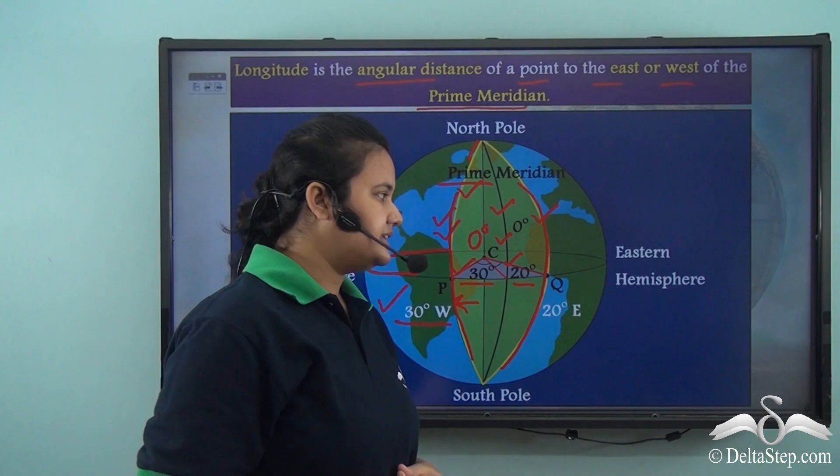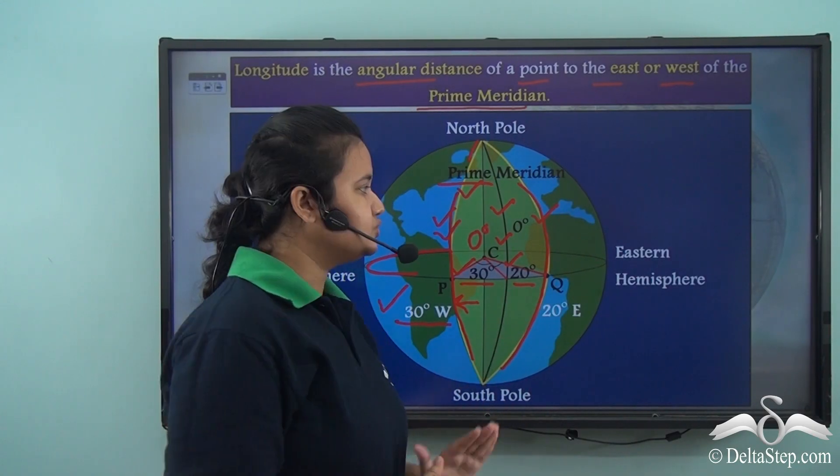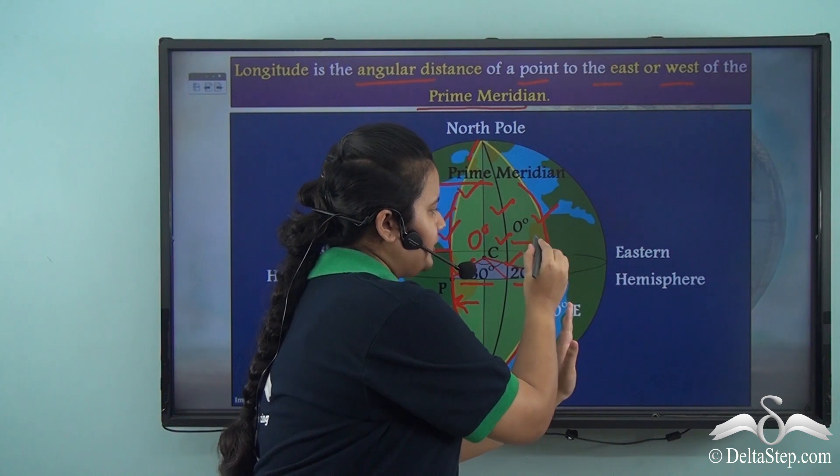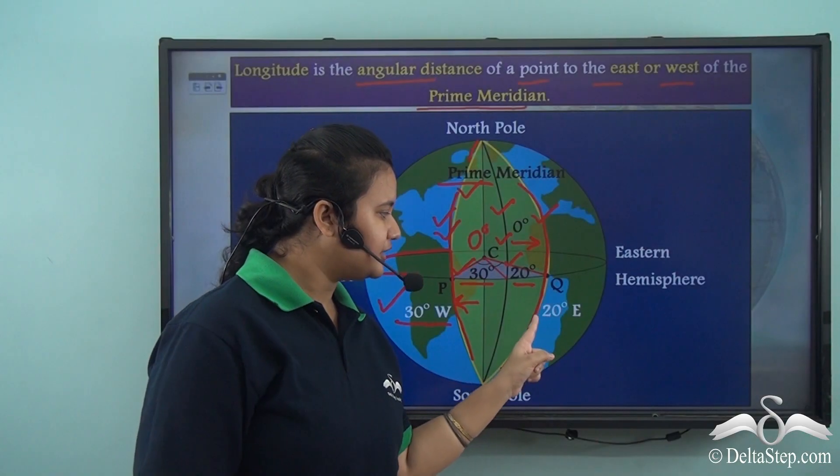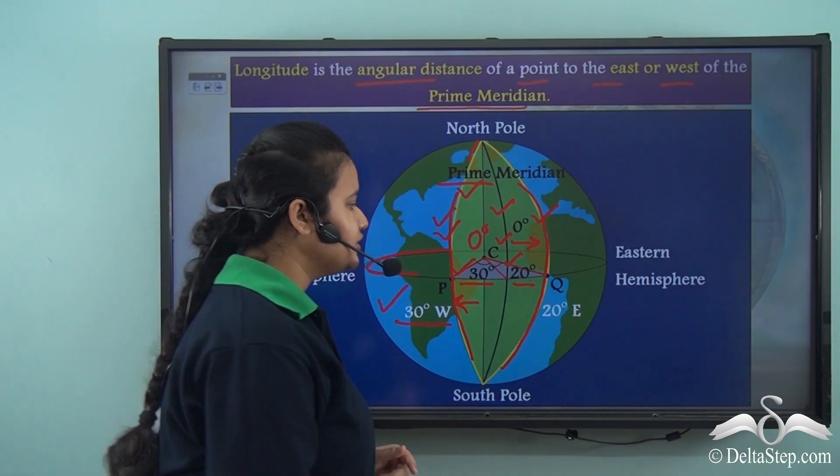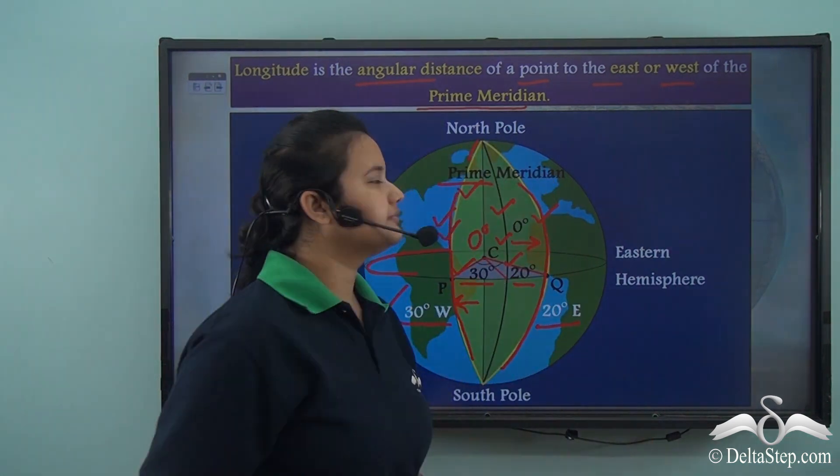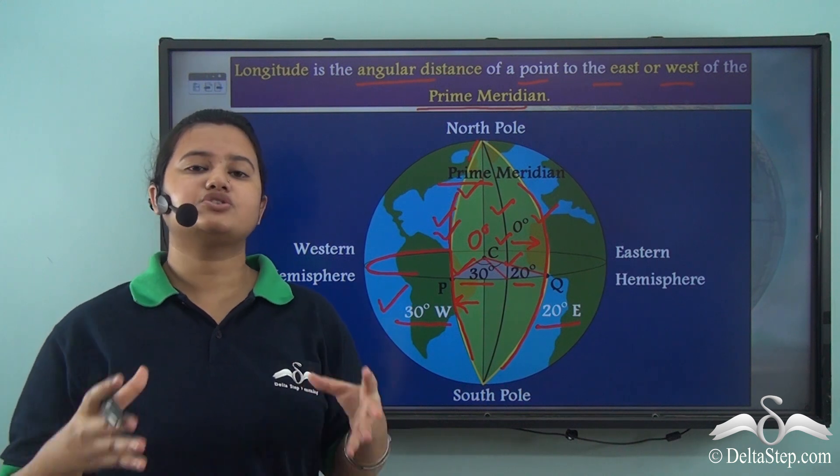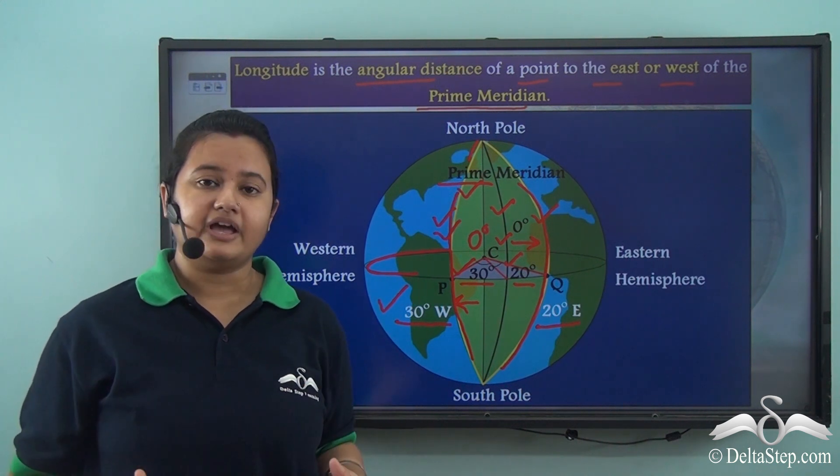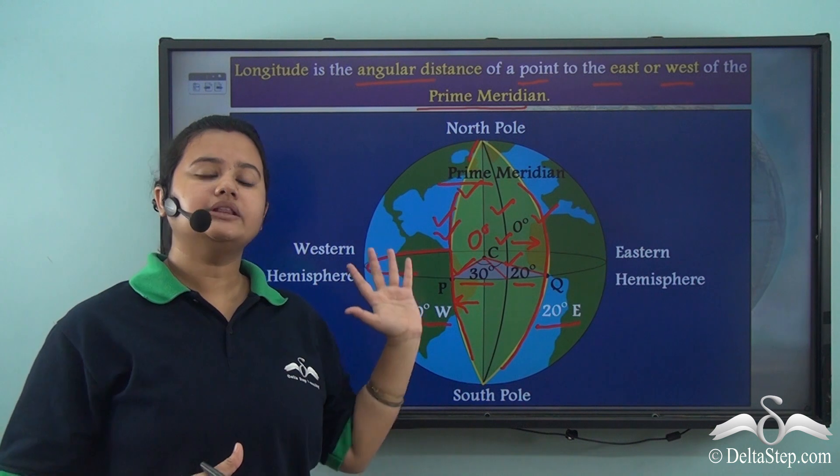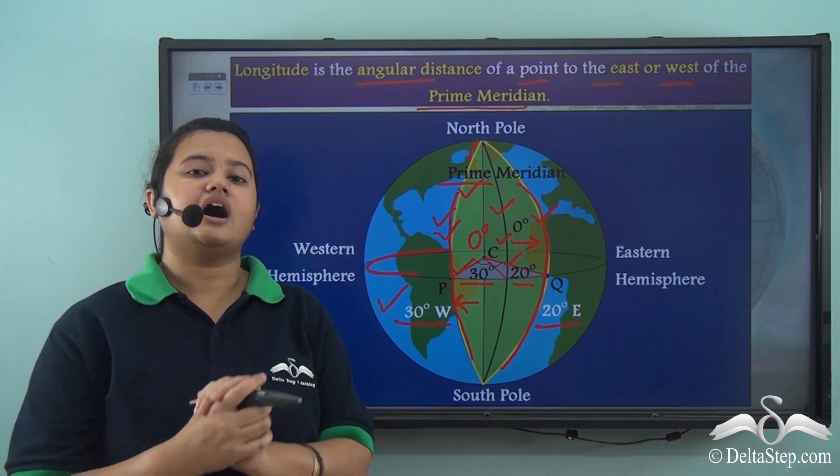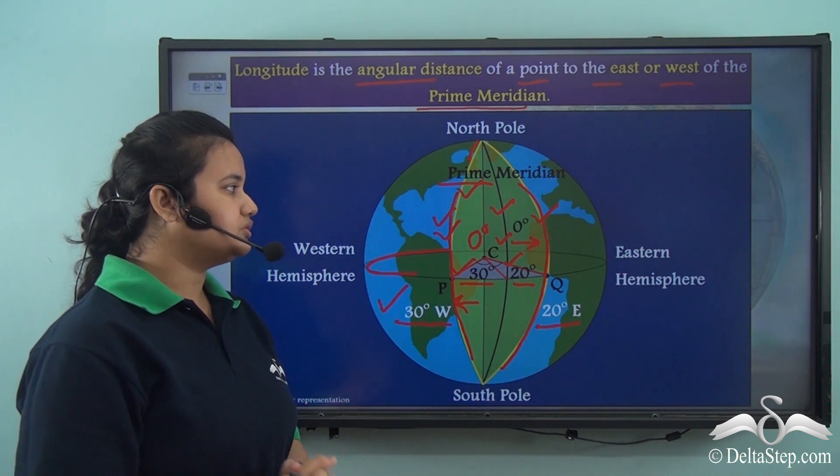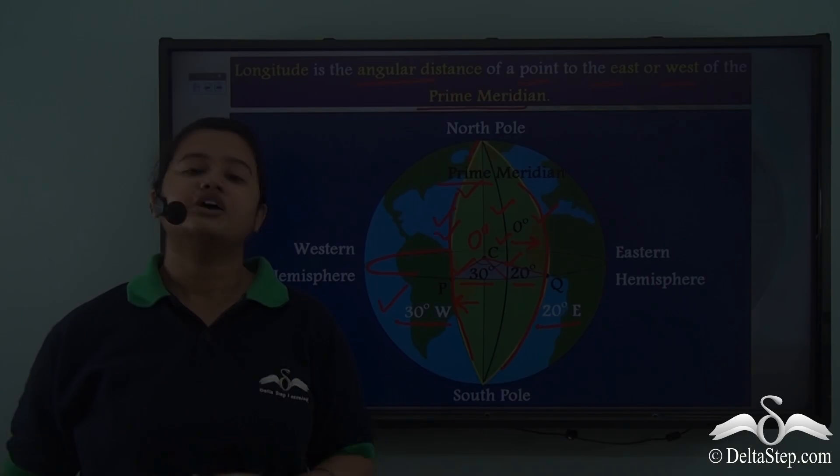Since this line lies to the east of the prime meridian, this particular line is known as 20 degree east longitude. This picture explains how the lines of longitudes are drawn and we find that all the lines of longitudes are drawn with respect to the prime meridian.